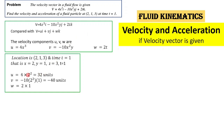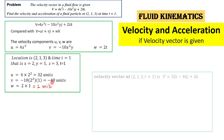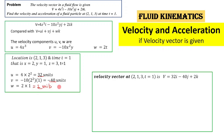Putting these values into u, v, and w, we get u = 32 units, v = minus 40 units, and w = 2 units (2 into 1 = 2). Now we can write the velocity vector at this point: u = 32, v = minus 40, and w = 2, giving us the velocity vector as 32i minus 40j plus 2k.